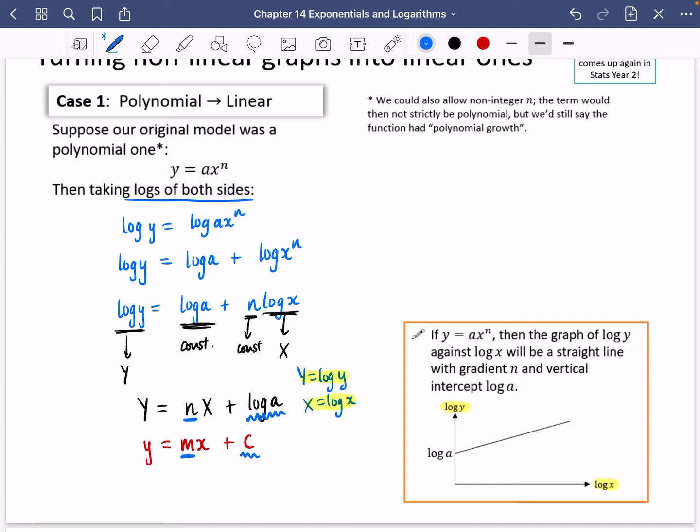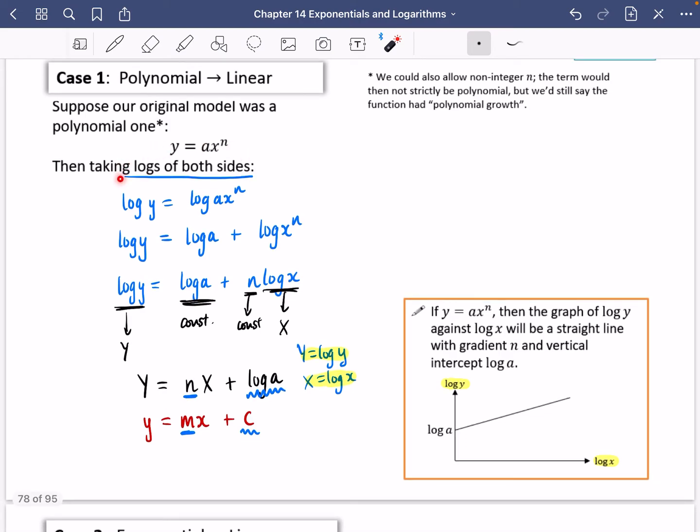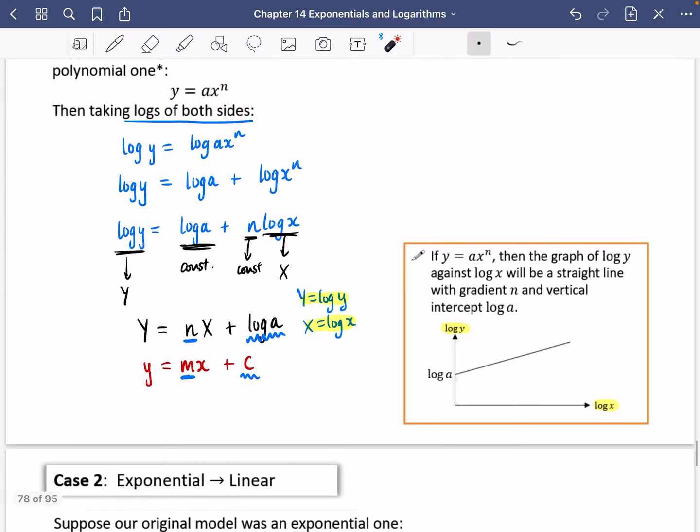So they've both been taken logs, which has meant that the graph axes are not x and y, but they are log x and log y. And you don't need to memorize this. This is just the process that we will do each time. So really, the only thing you need to memorize is just take logs of both sides.